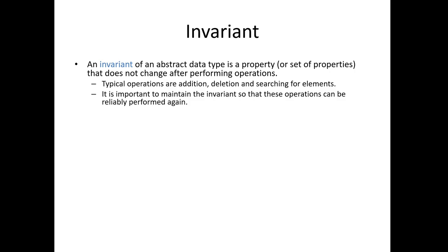The most common operations we're going to be looking at are adding something to the data structure, deleting something from the data structure, and fundamentally we also need to be able to find things in the data structure. After performing these operations, we might want to make sure that a certain set of properties remains true so that we don't invalidate how the data structure works. These set of properties that characterize a data structure we'll usually wrap together and call an invariant — something that will not change as we perform operations on that data structure.